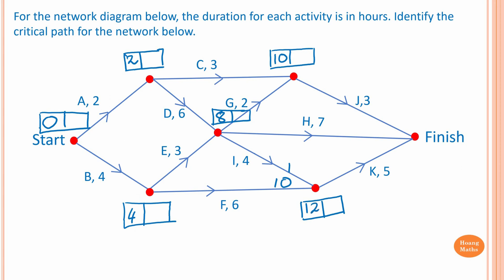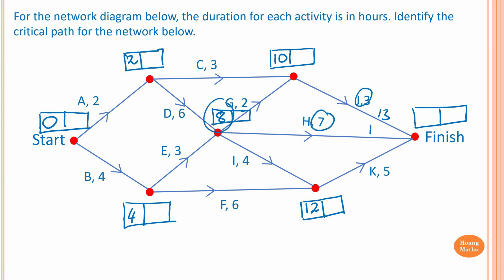The earliest finishing time: ten plus three is thirteen. For activity H: seven plus eight is fifteen, and five plus twelve is seventeen. Seventeen is the largest value, so the earliest finishing time is seventeen hours.